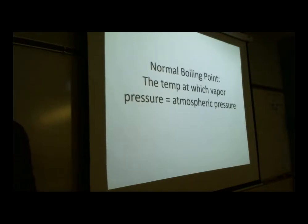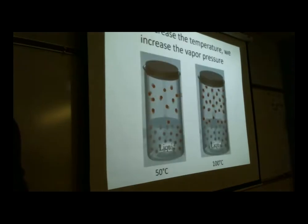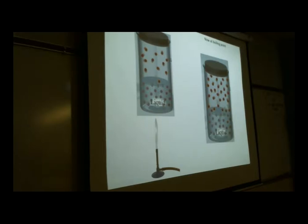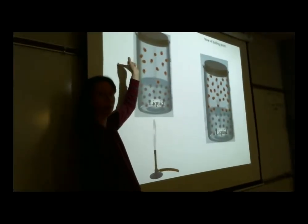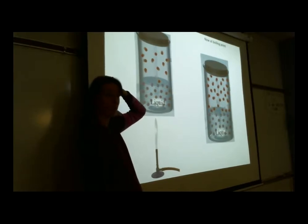We have to add energy to a beaker of water to make it boil because right now the vapor pressure doesn't equal the atmospheric pressure. Once we add enough energy, the vapor pressure inside equals the atmospheric pressure outside — and boiling occurs. At the top of Mount Everest, where atmospheric pressure is lower, water boils at only about 70-77°C instead of 100°C, because you need less energy to equalize the pressures.